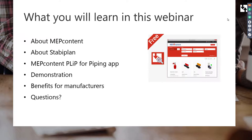What will you learn in this webinar? We'd like to tell you a bit more about MEP Content and Stabiplan, and then go deeper into our new app, the PLIP for piping. Martin will give a demonstration so you get a good idea of how both the manufacturer-branded and the generic PLIP work in Revit. After that, we'll go into detail on the benefits for manufacturers to publish your own app for Revit, followed by Q&A.